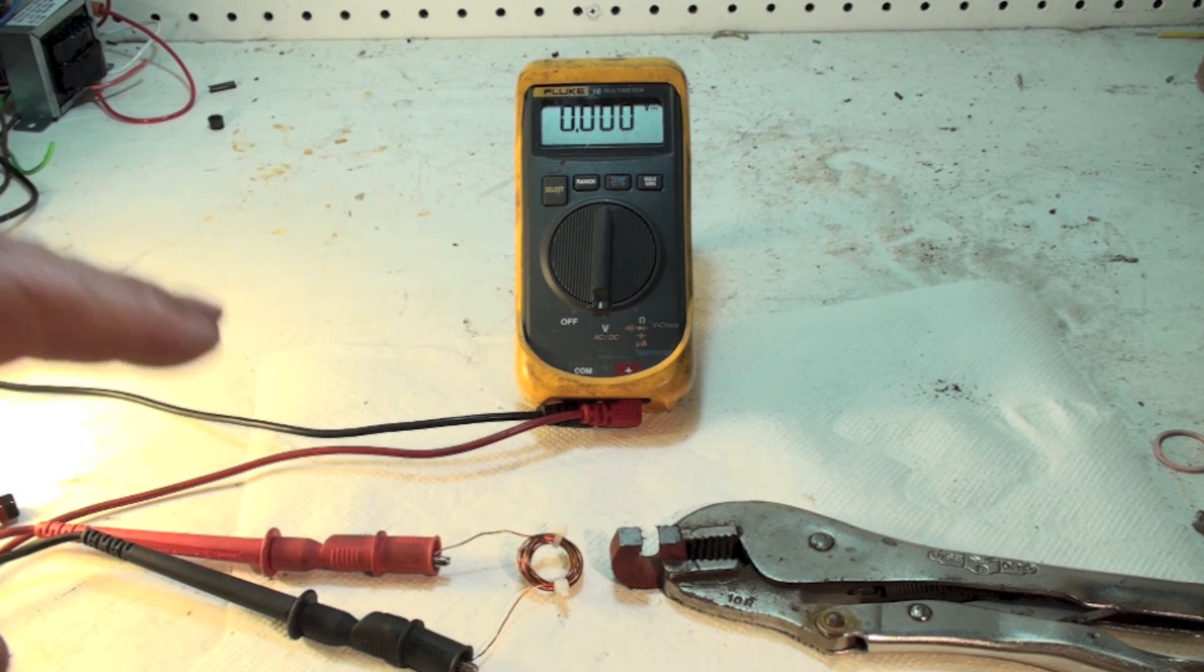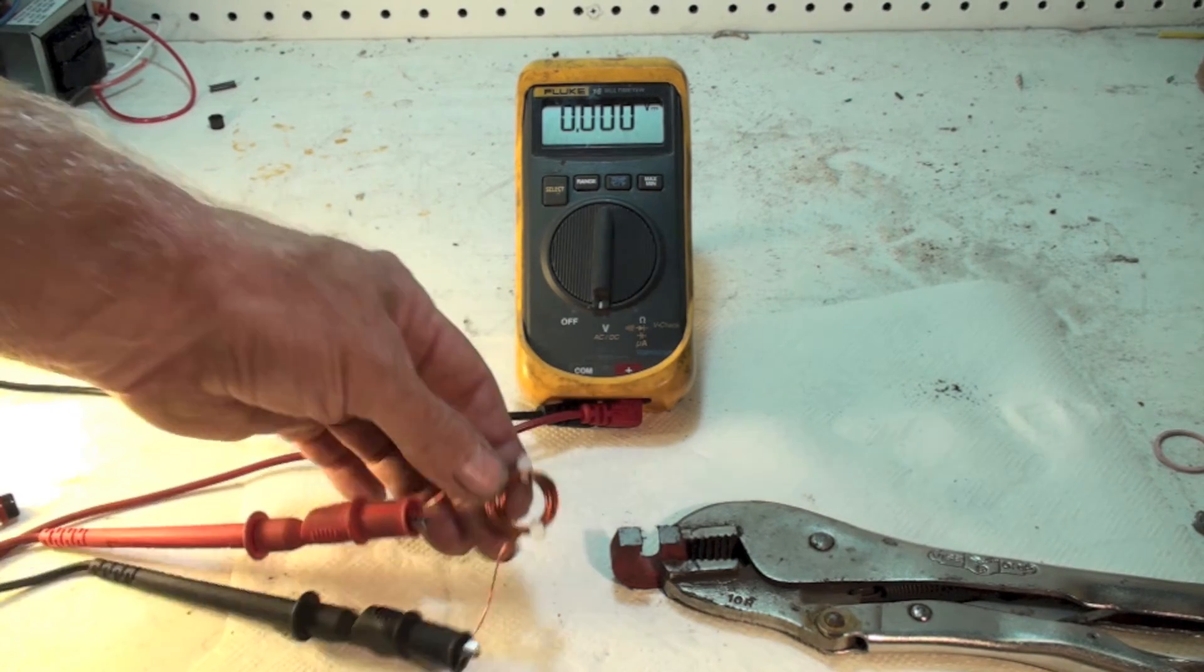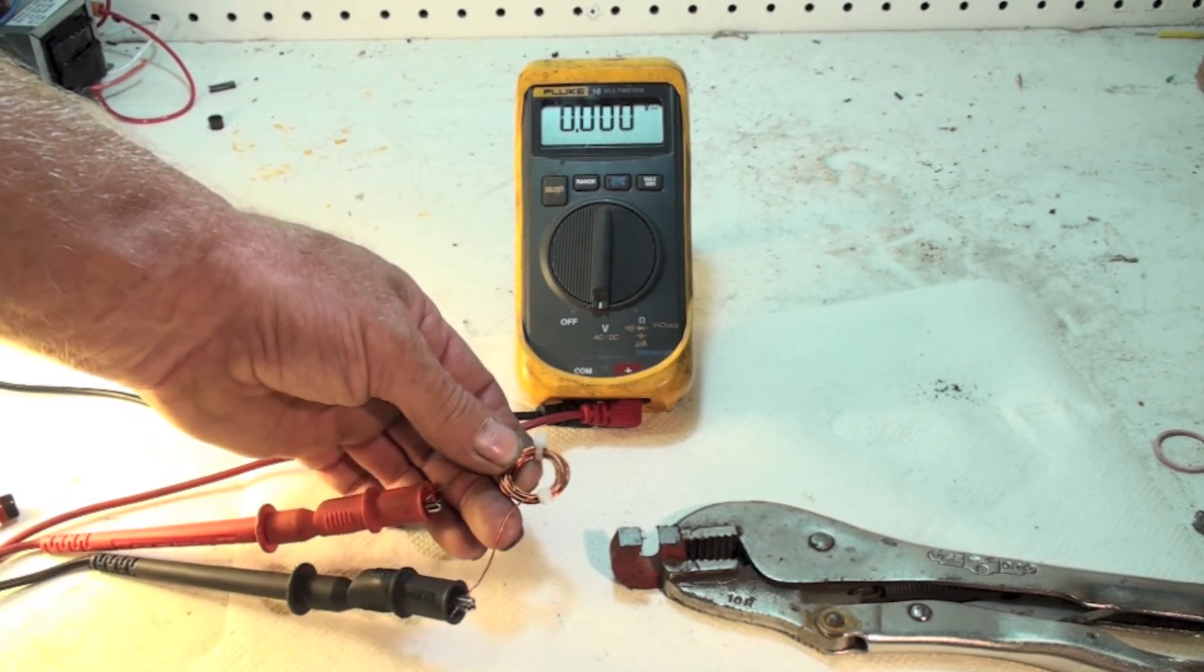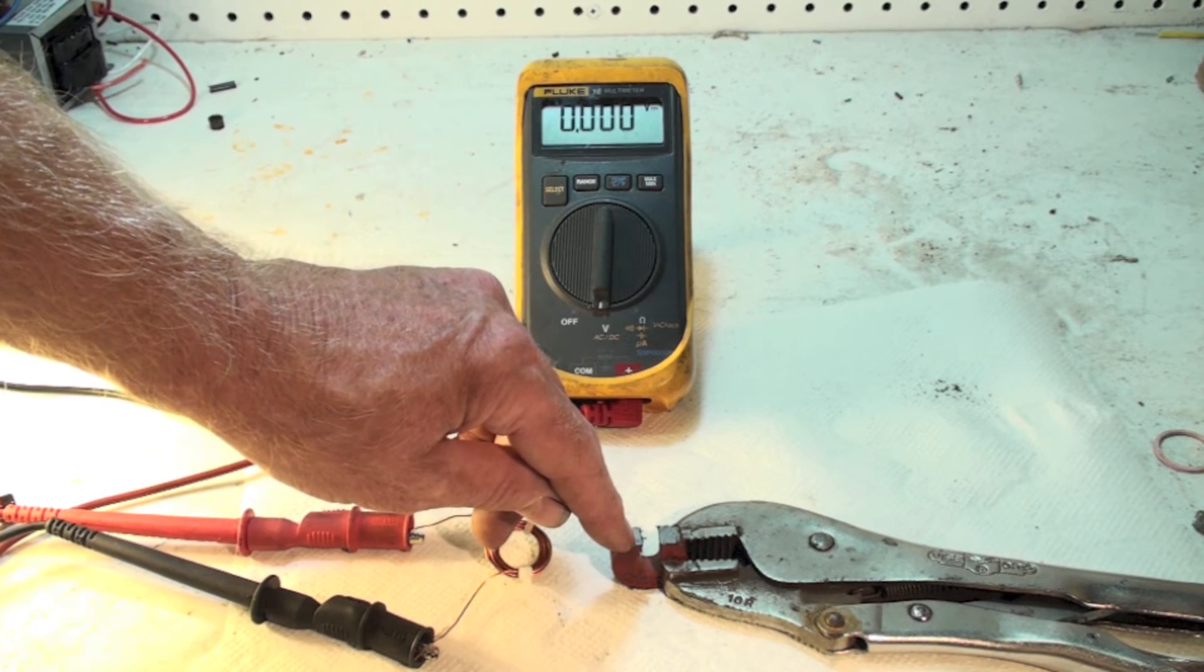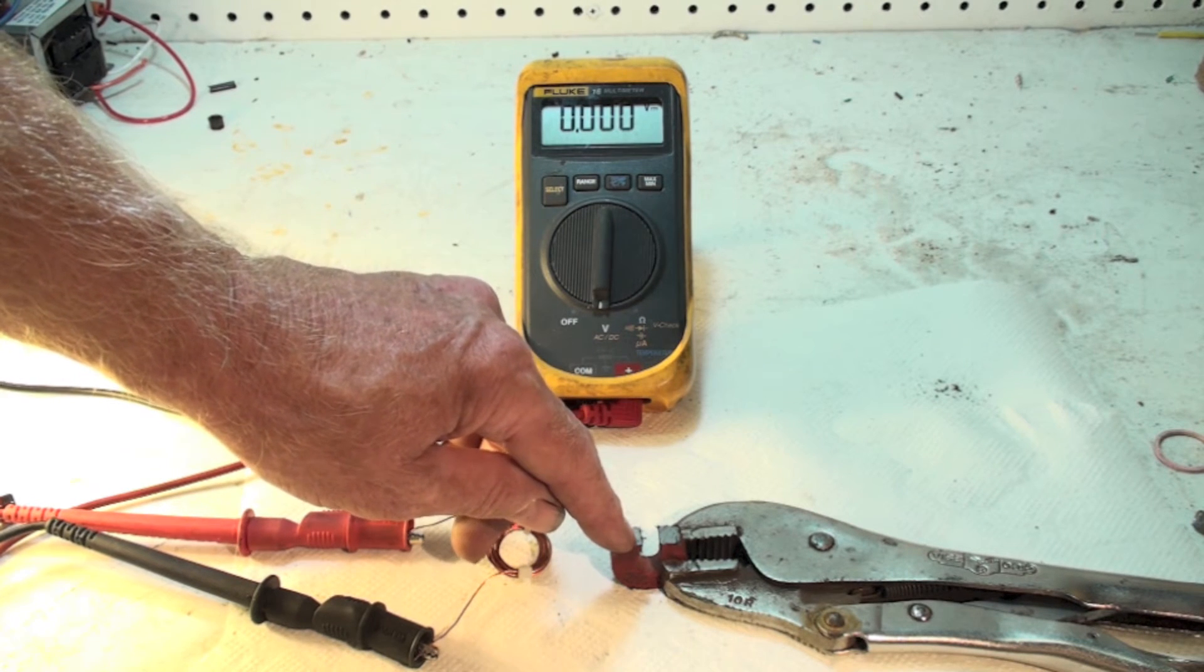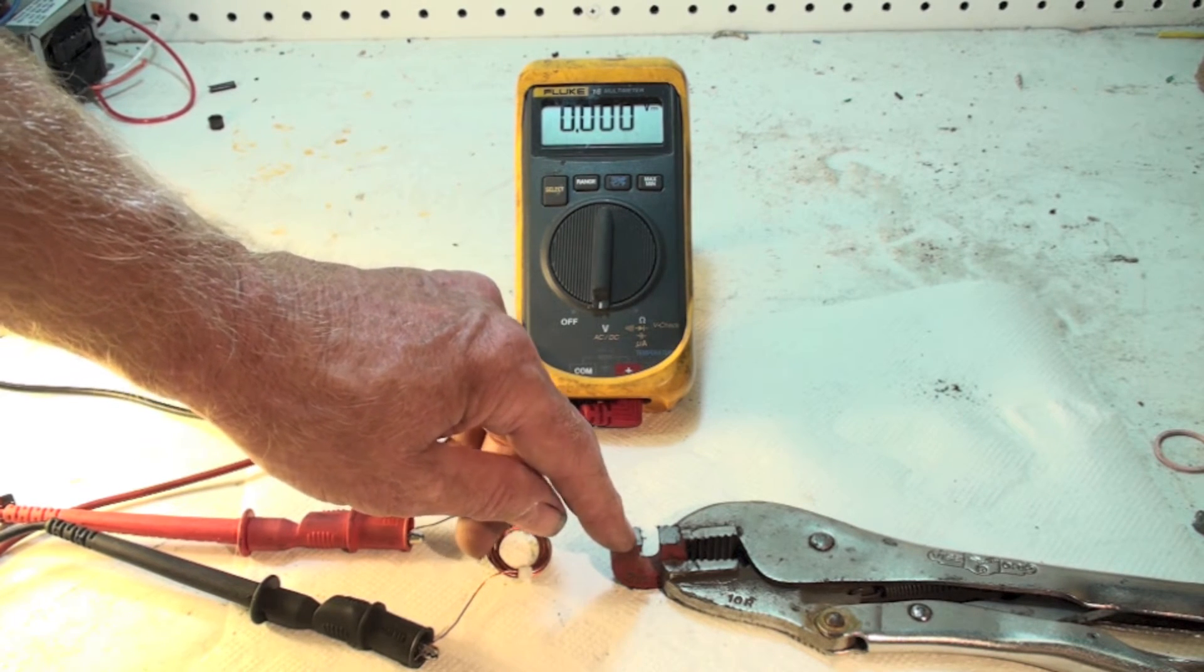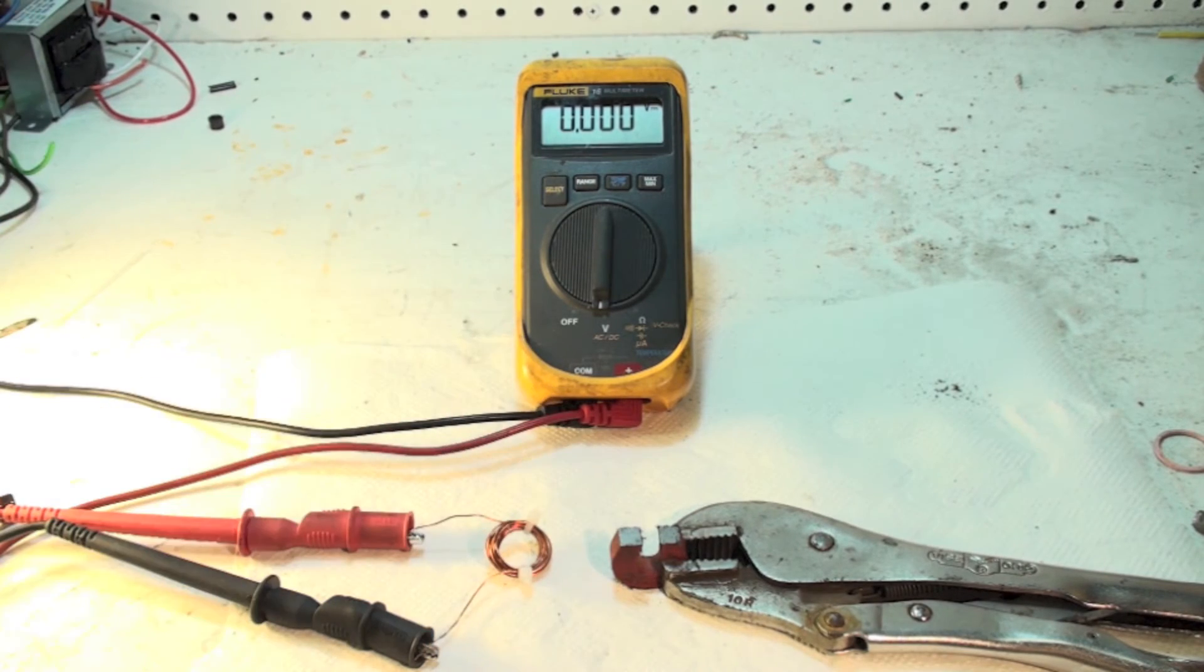Now this works the same whether I'm moving this coil, or I've made an electromagnet out of this and I've got AC going through it. AC is going to go high voltage, zero, low voltage opposite side, high voltage, zero, low voltage opposite side. It's a wave.